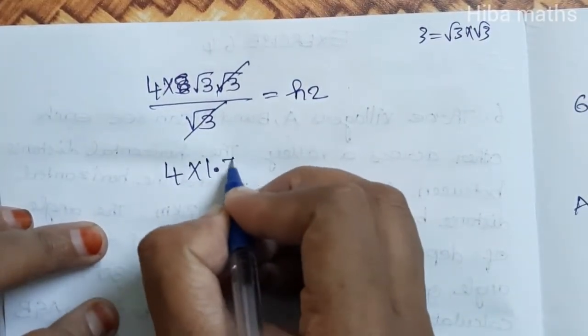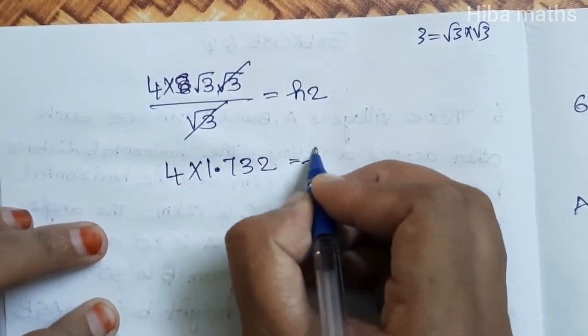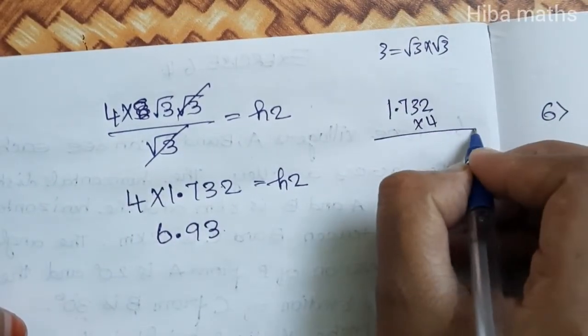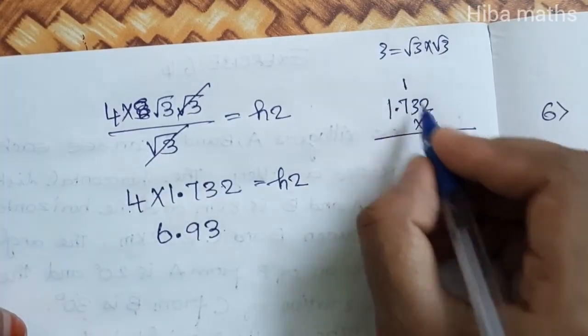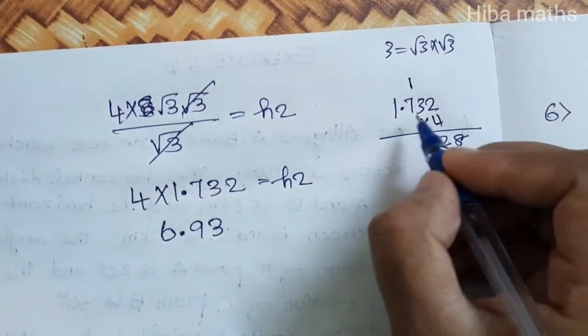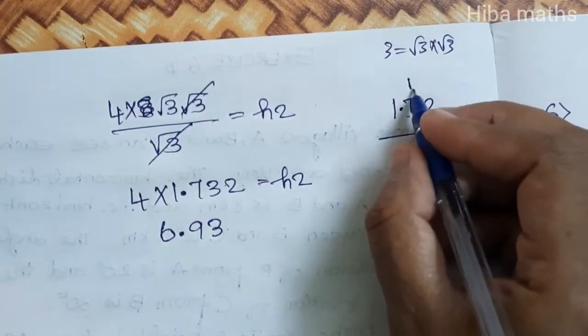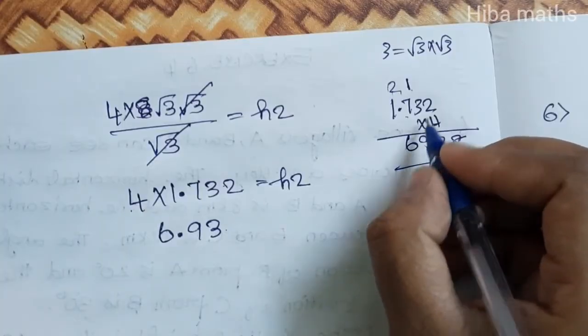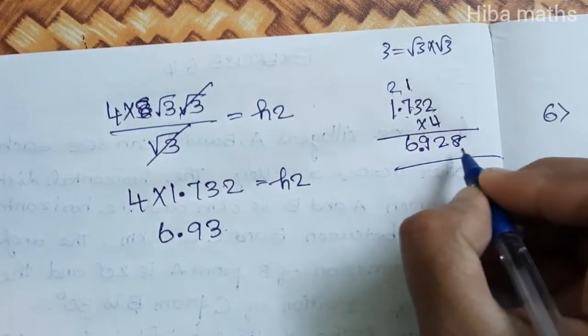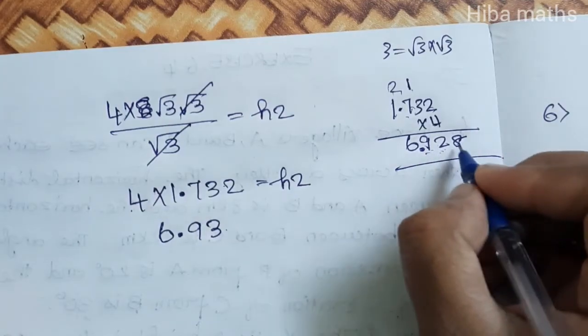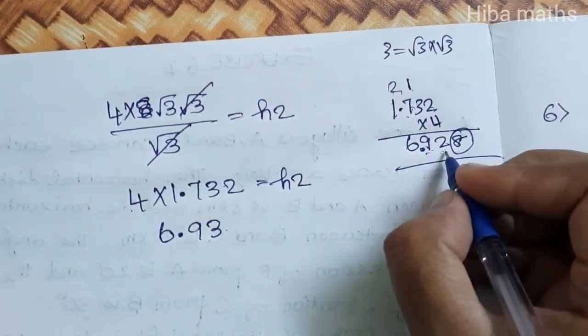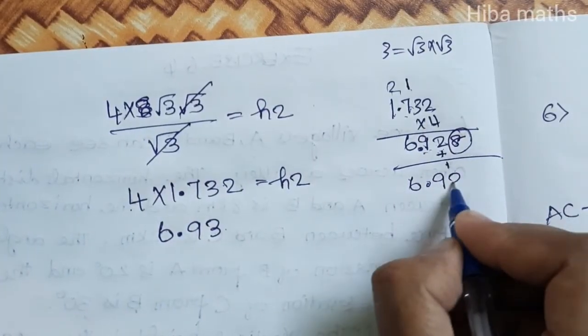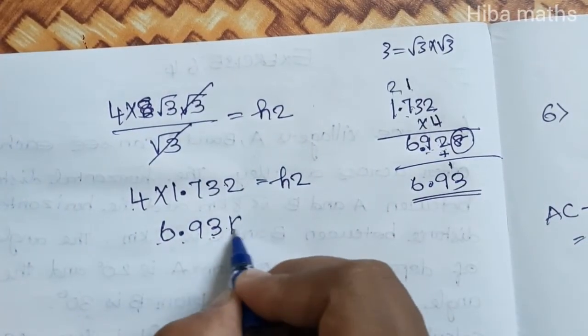Then 4 into 1.732 equals h2. So 1.732 into 4: 2 times 4 is 8, 3 times 4 is 12 carry 1, 7 times 4 is 28 plus 1 is 29, carry 2, 1 times 4 is 4 plus 2 is 6. So we get 6.928. With 2 decimal places, 8 rounds to 5, so we get 6.93. That's our answer: 6.93 kilometers equals height 2.